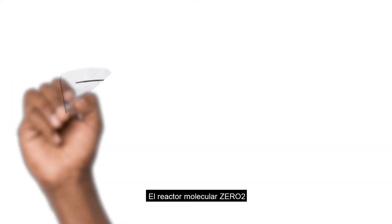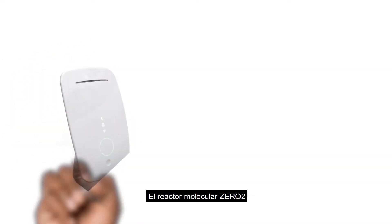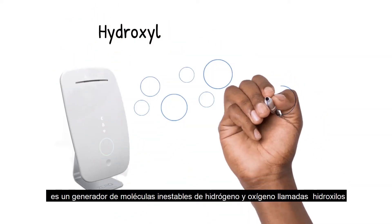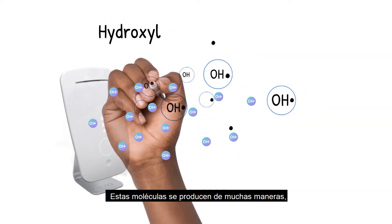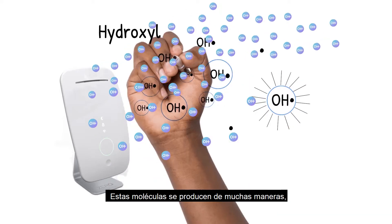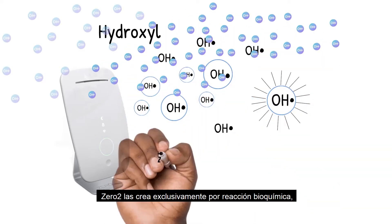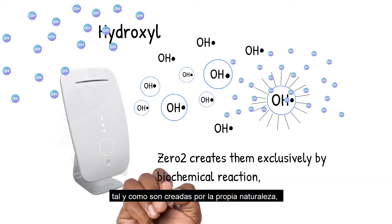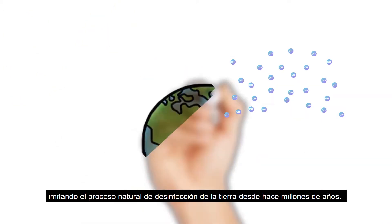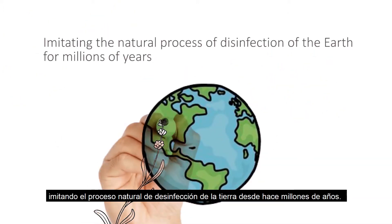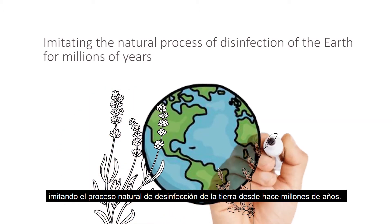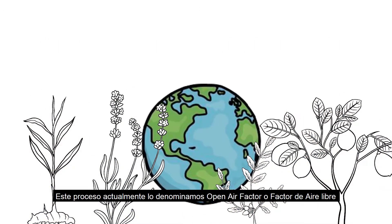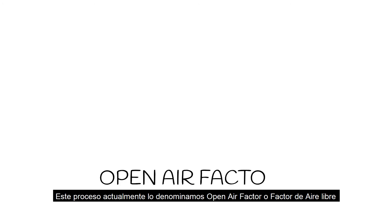Zero Two molecular reactor is a generator of unstable molecules called hydroxyls, composed of hydrogen and oxygen atoms. These molecules are produced in many ways; Zero Two creates them exclusively by biochemical reaction — the same way nature does — imitating the natural process of disinfection of the Earth for millions of years.